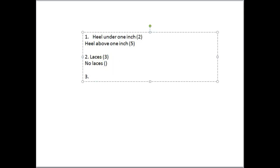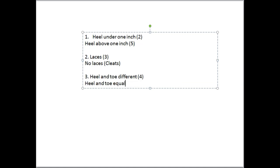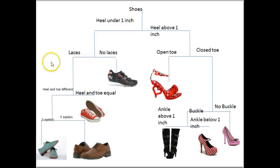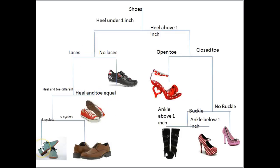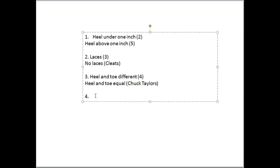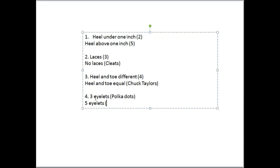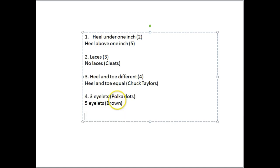Number three is the next decision: heel and toe different sizes, or heel and toe equal. There's only one shoe left there — the red Converse, so we're down to the species 'Chuck Taylors.' Number four covers those aqua and brown dress shoes: three eyelets versus five eyelets. If it's got three eyelets it'll be one name — 'polka dots' — and five eyelets gets the brown shoes. You'll see on your dichotomous key that at the end of a couplet I'll have the species name, order, family, or whatever.